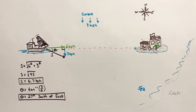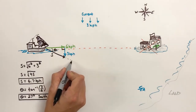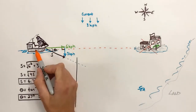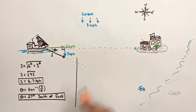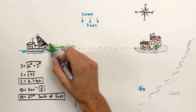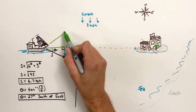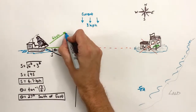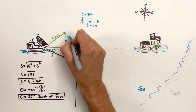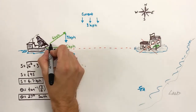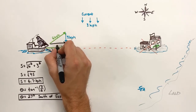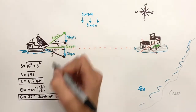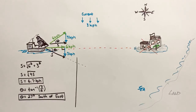If this ship were to continue on this path, it would miss the fortress completely. If the captain wants to pilot the ship directly to the fortress, the ship is going to need to be pointed slightly north so that as the ship moves northeast, the current will sweep the ship back to the south, and as a result the ship will just move in the easterly direction. What we're going to do now is figure out exactly what direction the ship needs to be pointed so that it can travel due east.